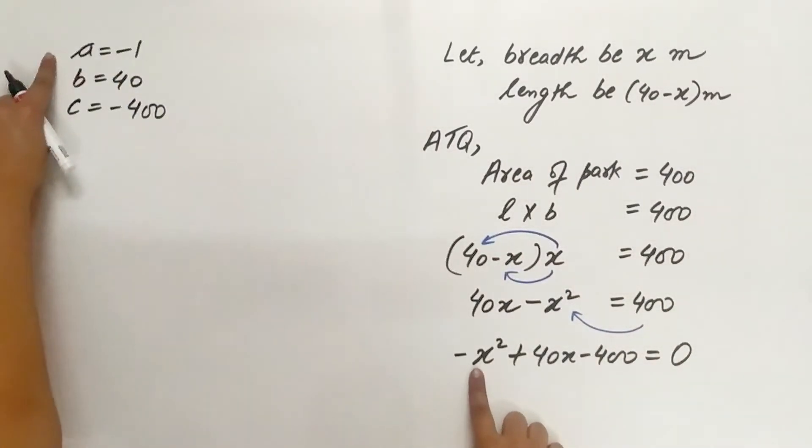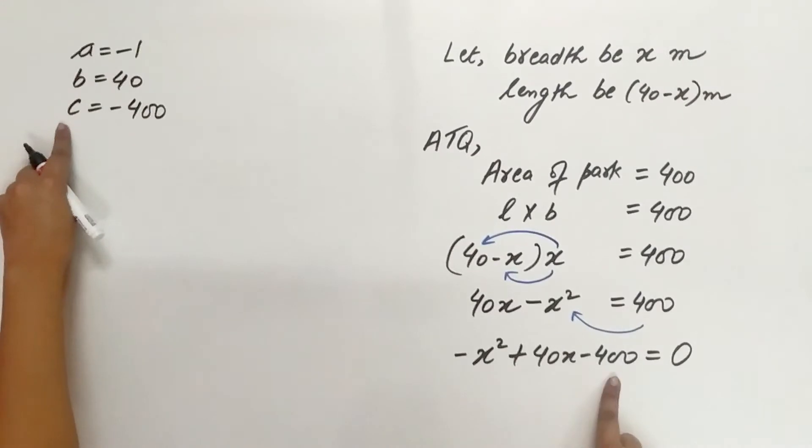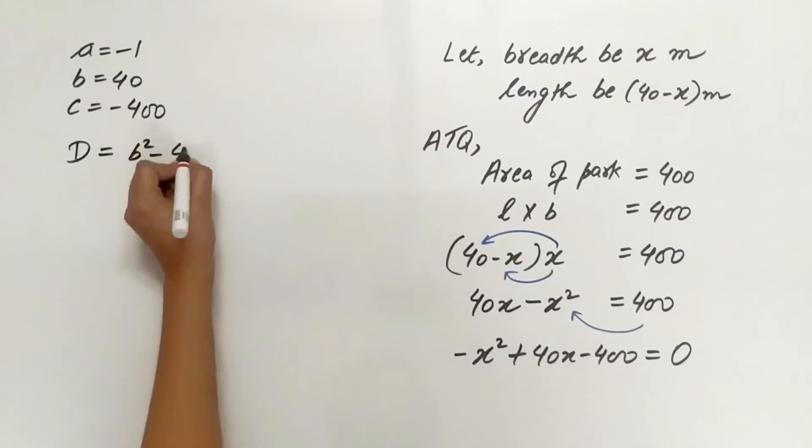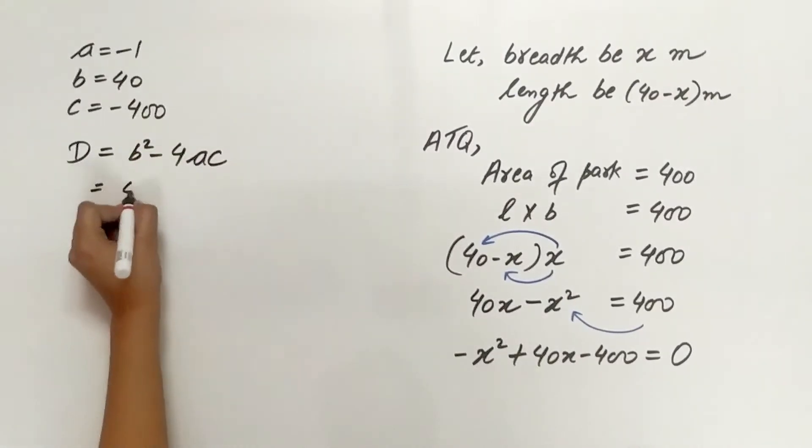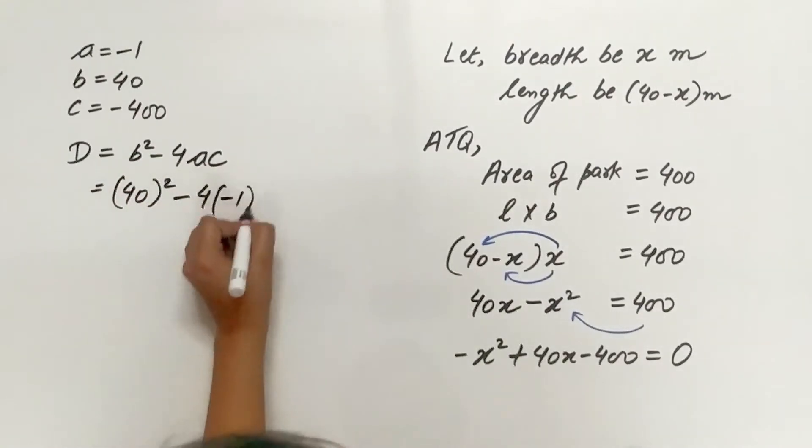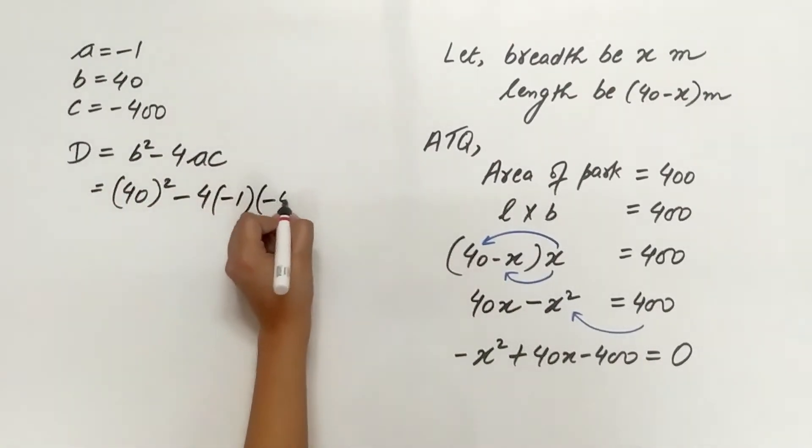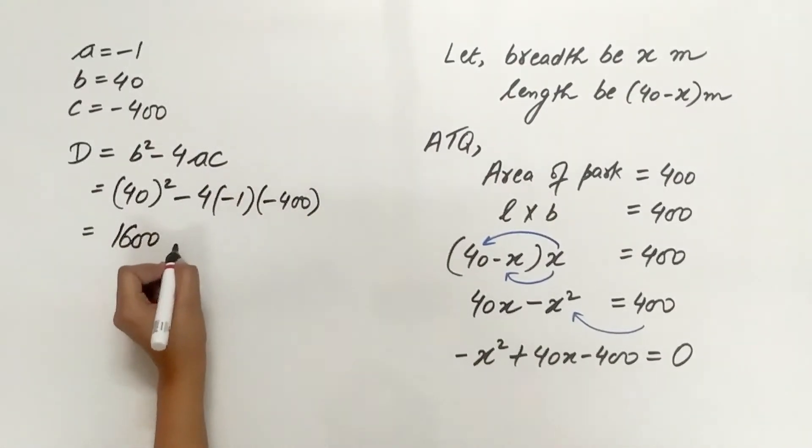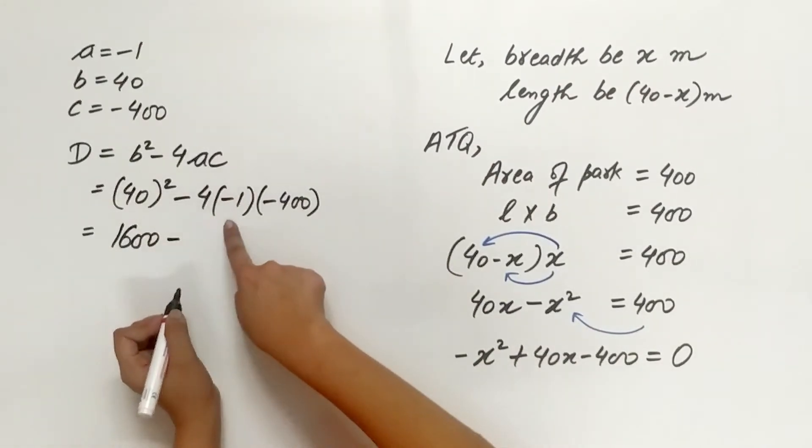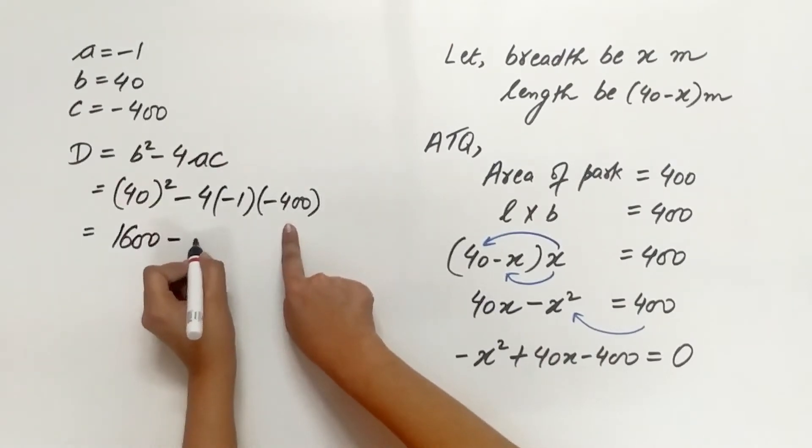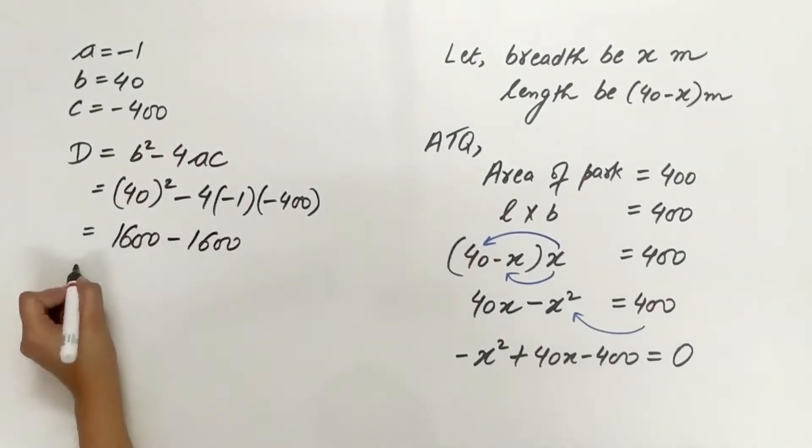A is negative 1, B is 40, C is negative 400. D equals B square minus 4AC. 40 square minus 4 multiplied by negative 1 multiplied by negative 400. 40 square is 1600. 1600 minus 1600 equals 0.